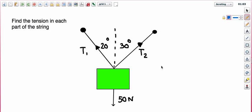Okay, so this is a different type of question where you have a box and you've got two different strings at different angles. So one of the strings is 20 degrees from the vertical, the other string is 30 degrees from the vertical. And we want to find the tension in each part of the string.